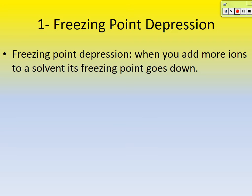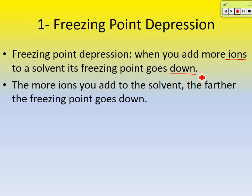Let's talk about freezing point depression first. When you add more ions to a solvent, its freezing point goes down. The more ions you add to the solvent, the farther the freezing point goes down. So if you put a bunch of stuff in water, it's going to be a lot harder — meaning you're going to have to go to a much colder temperature in order to freeze it.